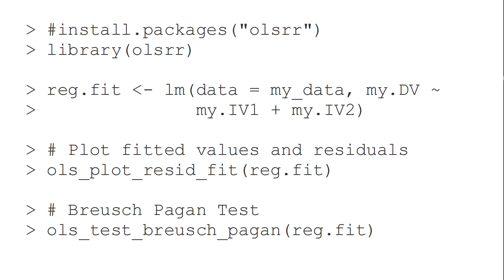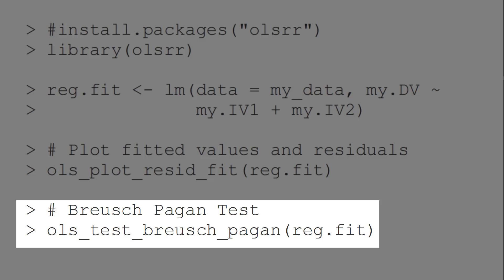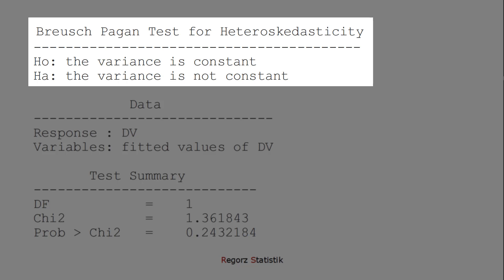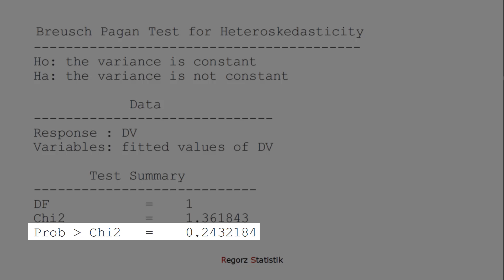There are different hypothesis tests for heteroscedasticity. One of the most popular is the Breusch-Pagan test, which we can run with this function here. The null hypothesis is that we have homoscedasticity. So a non-significant p-value, as in this example here, is a good sign.